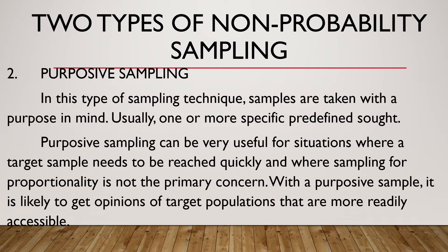The second type is called purposive sampling. From the word itself — purposive — meaning you are going to choose your sample based on your purpose. There are more classifications of sampling that we are going to discuss later in this video. In this sampling technique, samples are taken with a purpose in mind, usually with one or more specific predefined criteria.